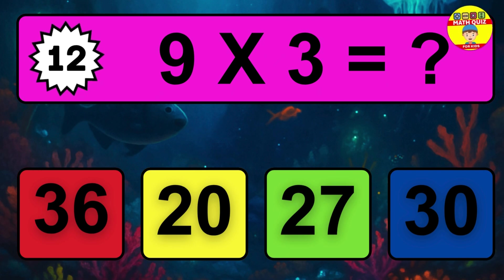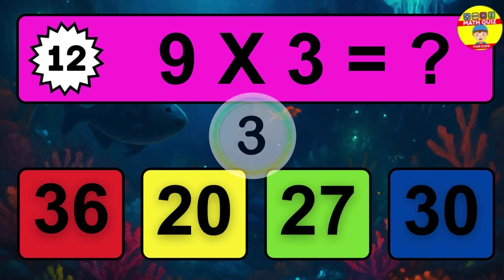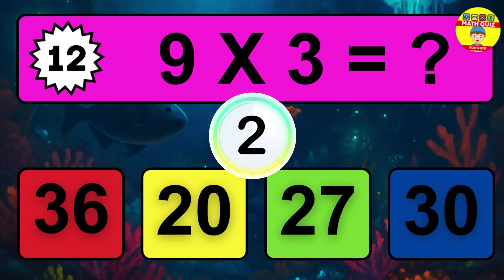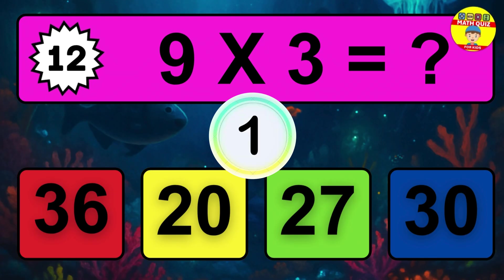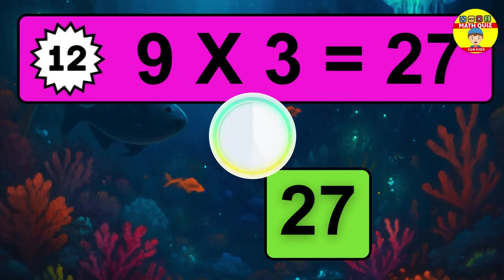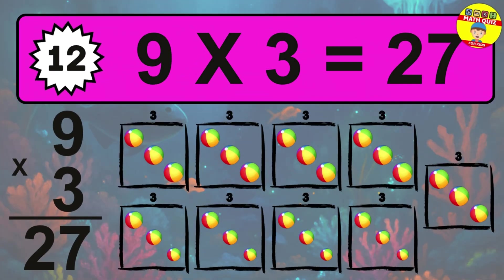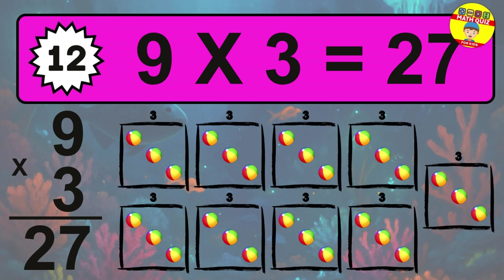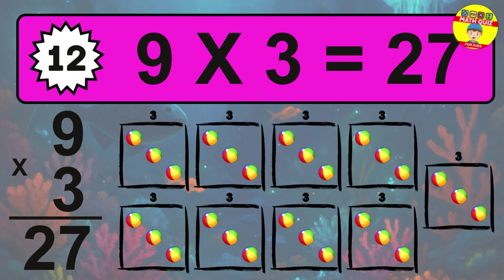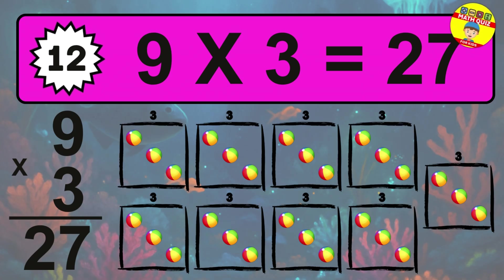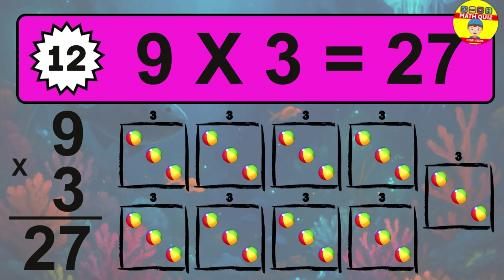Question 12. 9 times 3 equals what? The answer is 9 times 3 is 27. To calculate, we have 9 groups with 3 balls each one. So how many balls do we have? 27 balls.